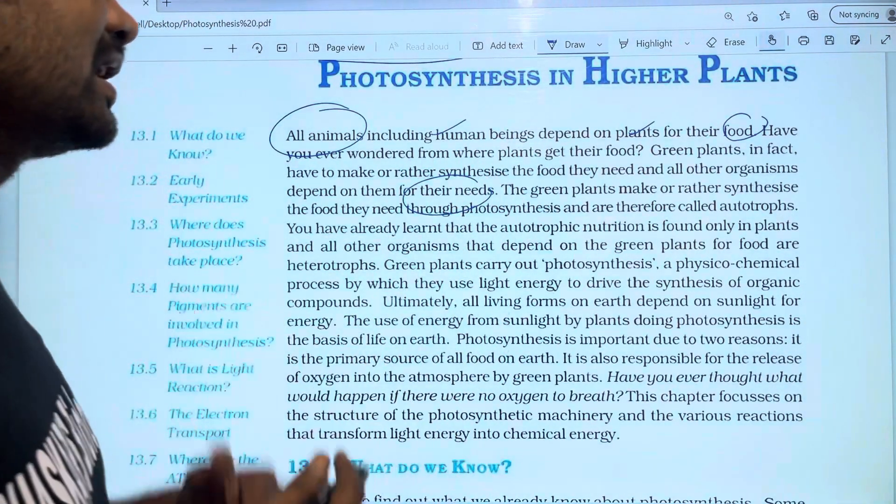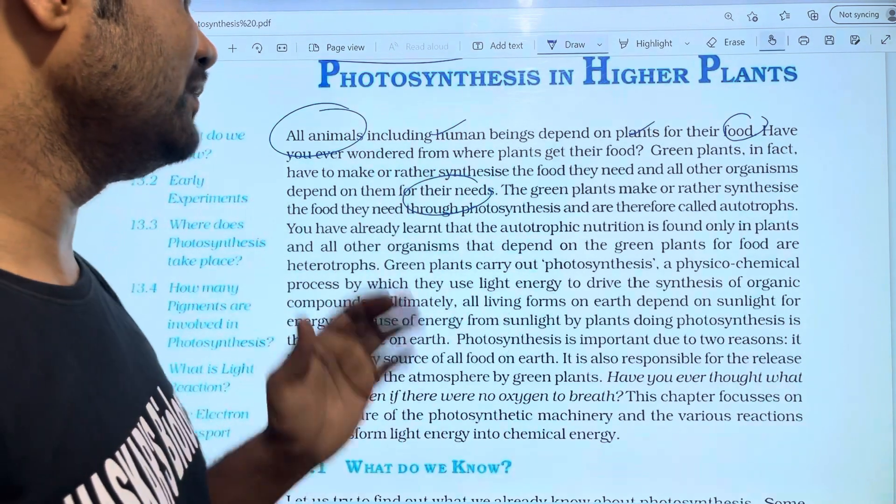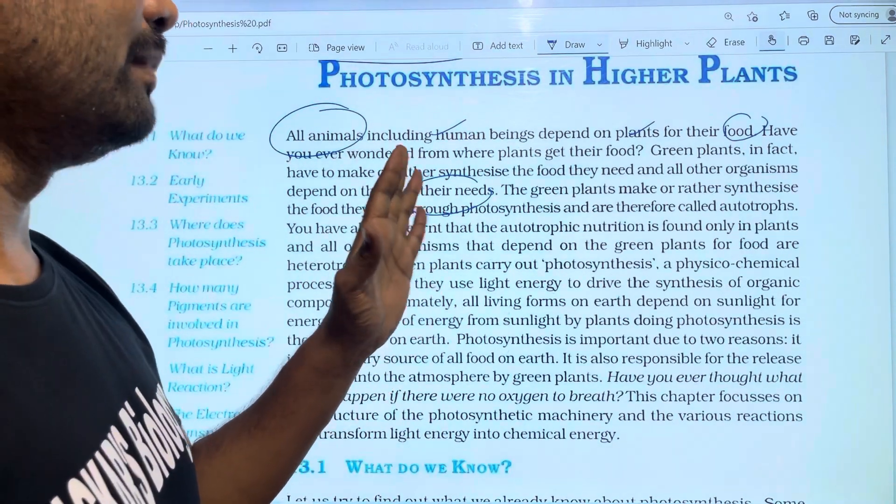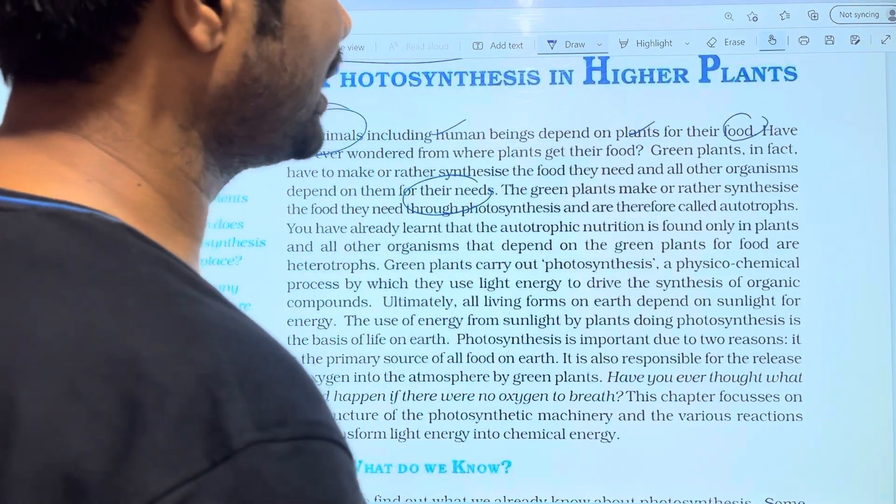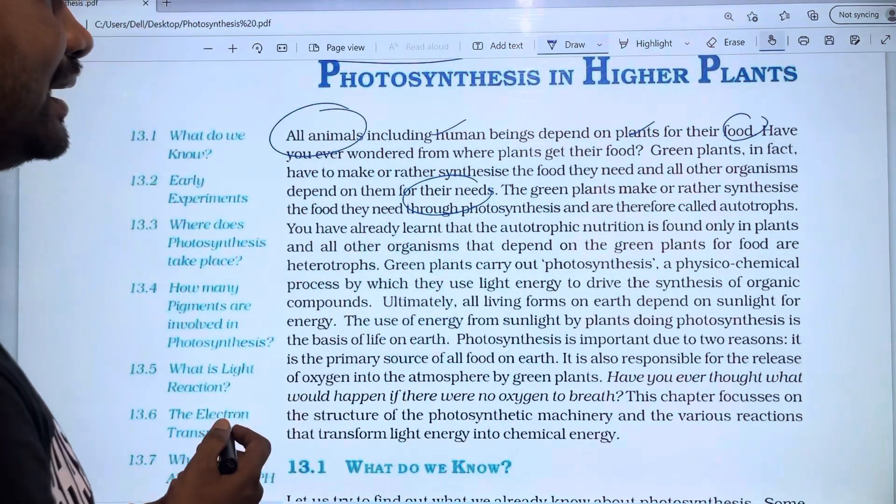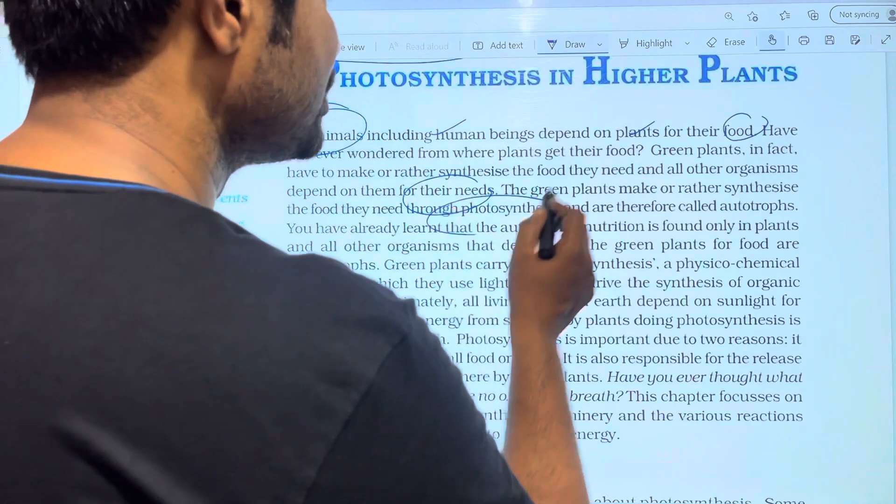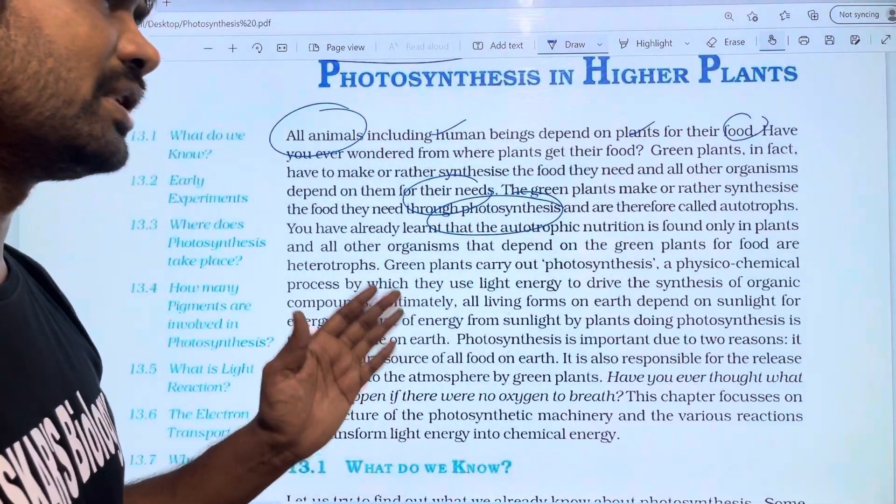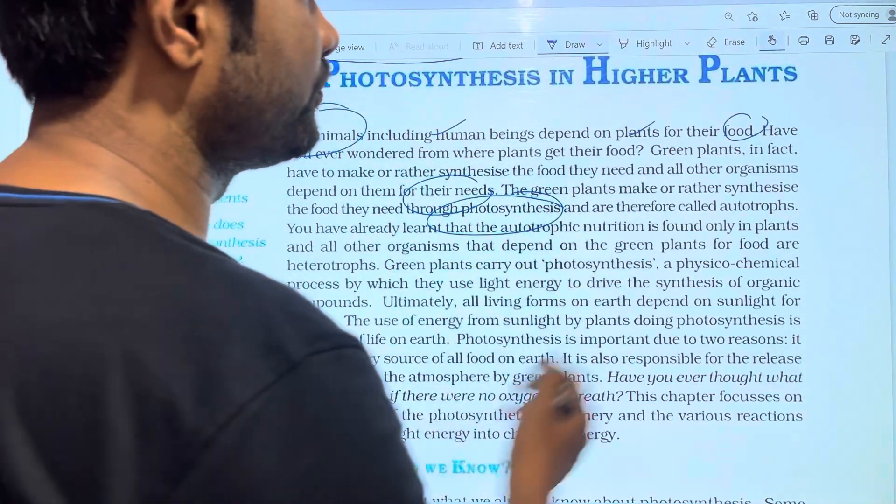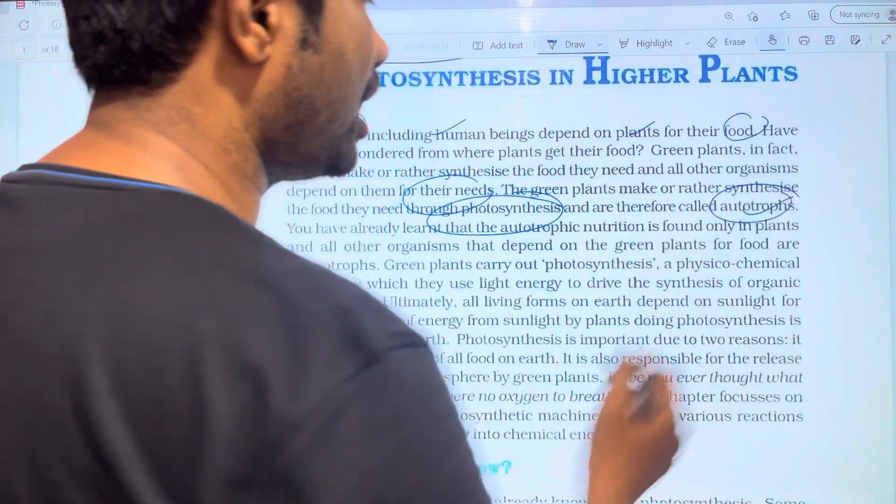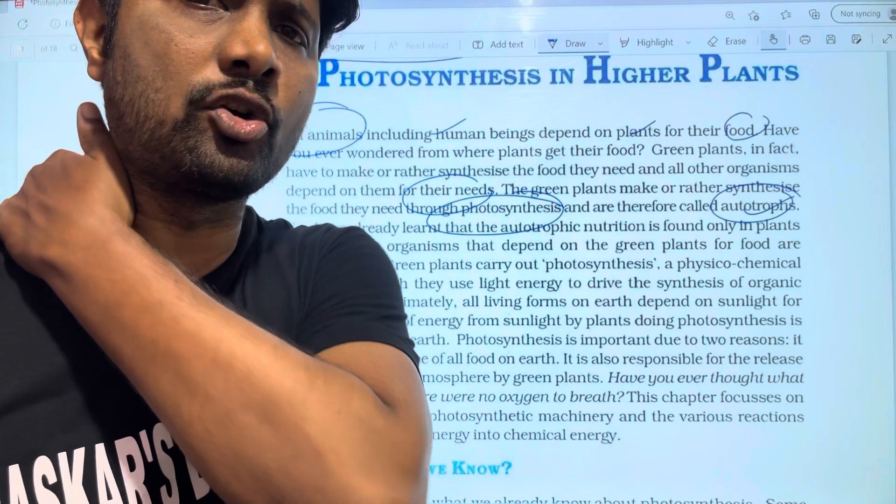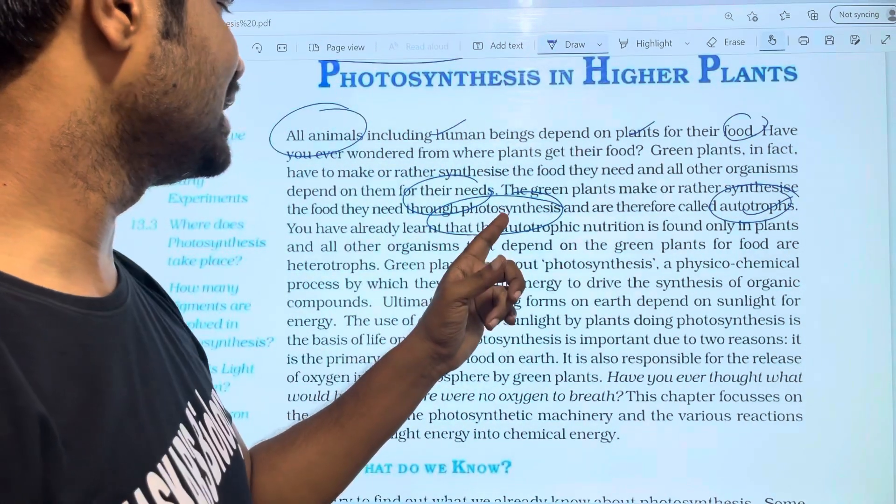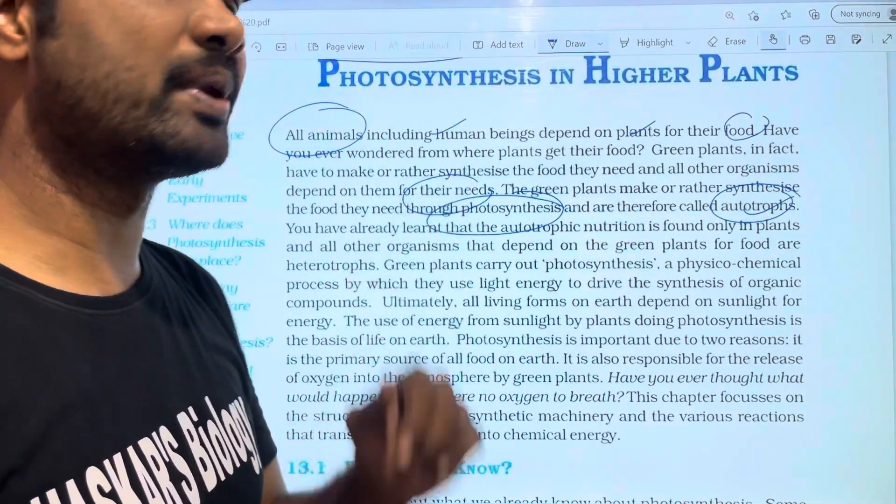Green plants make or synthesize the food they need through photosynthesis, and are therefore called autotrophs. Animals and other organisms are heterotrophs.